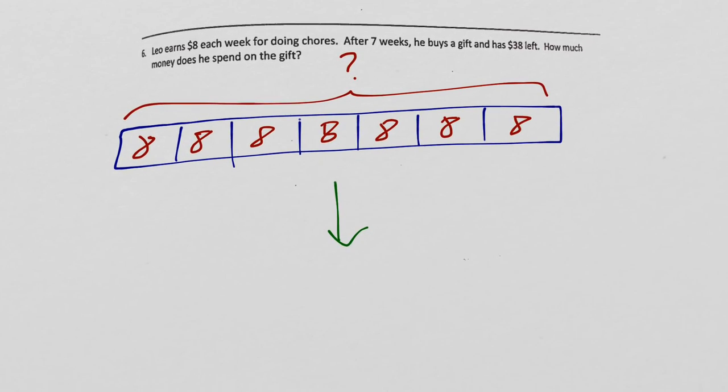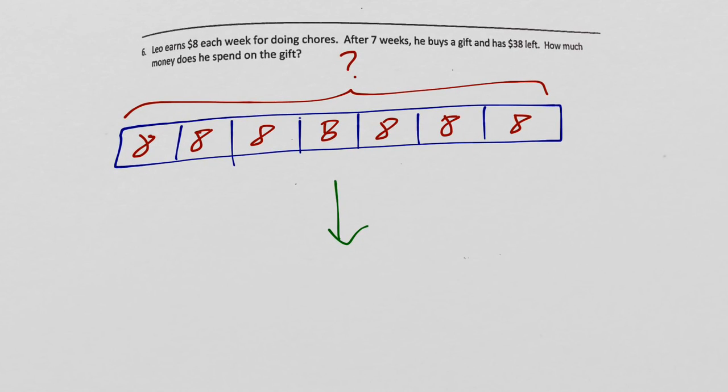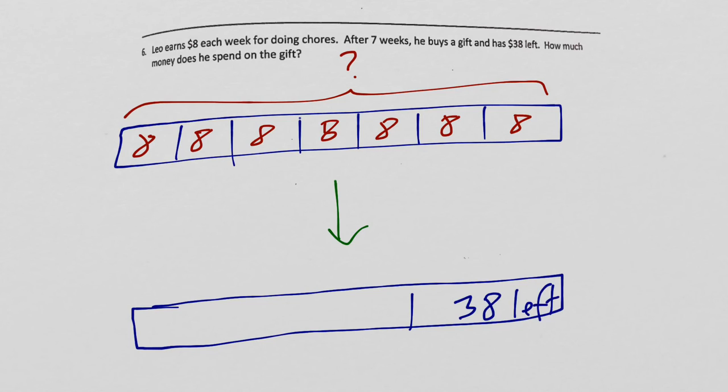After I figure that out, there's going to be another step. The next step is after he earned all that money, he spent some. We want to find out how much he spent. That's the actual problem. What we know is that however much he spent, he has 38 left. Whatever this amount is, is how much he spent. Because this is the amount of money he has left over. But we have to do this in two steps.